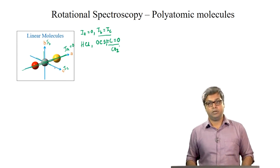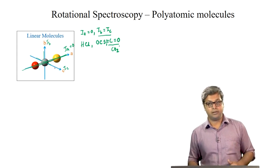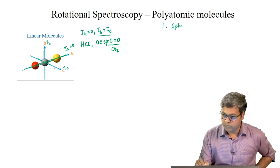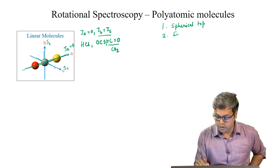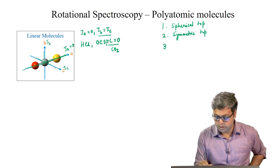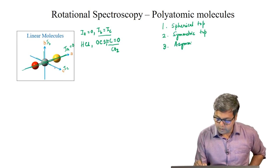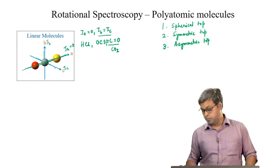In general, any molecule can be classified into three top or rotor categories: spherical top or spherical rotor, symmetric top or symmetric rotor, and asymmetric top or asymmetric rotor. We will look into these categories one by one.